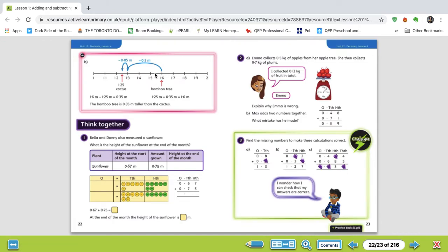So let's take a look at question B. So this is a subtraction problem like I just said, because we're calculating how much bigger the other one is from the other. So we've got the bamboo tree at 1.6 and the cactus at 1.25.